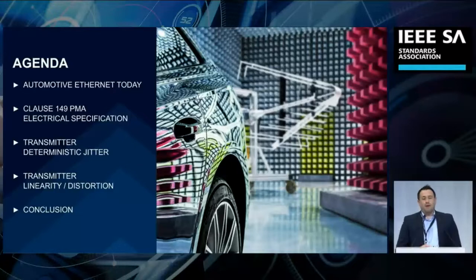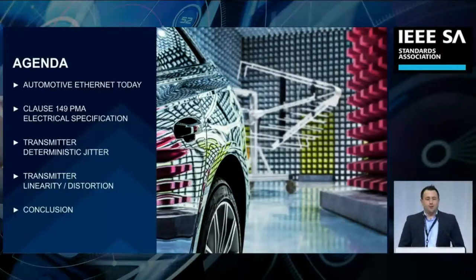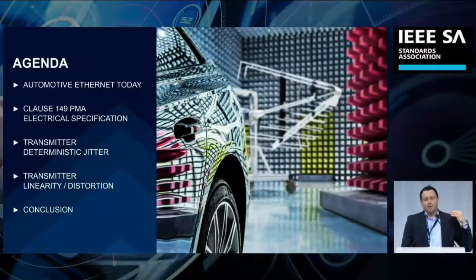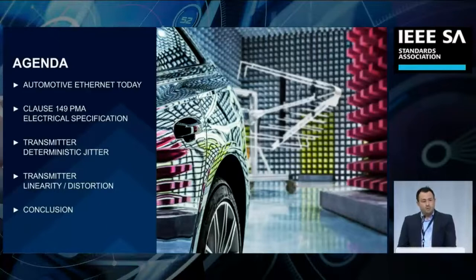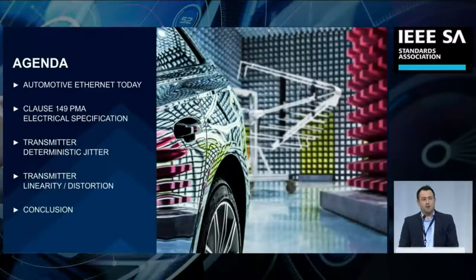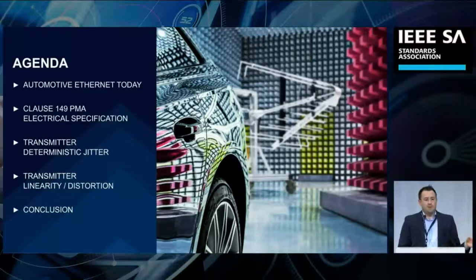When I was piecing together this presentation, it became very clear that I was going to have to reduce the scope of my topics given only a 30-minute time frame. I'm going to discuss how we got to where we are with automotive Ethernet today, a little bit of a history lesson, stepping through the IEEE process, then looking specifically at the electrical PMA specification for 10GBase T1, going into deterministic jitter, linearity and distortion test cases, focusing on parameters that have changed since 1000Base T1, and then a brief summary.